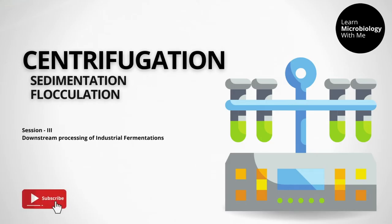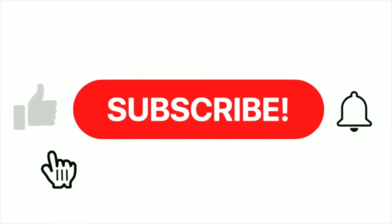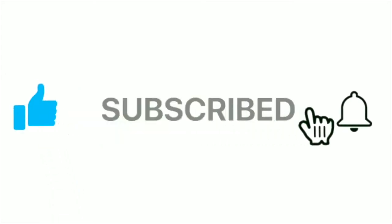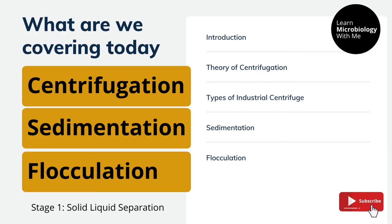Hello everyone, welcome to the third session of downstream processing. In session one we discussed the cell disruption methods for intracellular products. In session two we started with the next step, solid-liquid separation, and discussed filtration in detail. Now in this session we look at other methods of solid-liquid separation, which includes centrifugation, sedimentation, and flocculation.